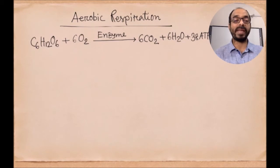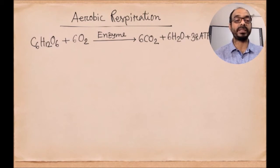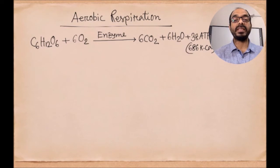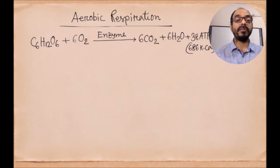Here, enzymes act as catalysts. A catalyst is a type of biochemical substance that accelerates the rate of reaction and controls the activities of the reactions. From one molecule of glucose in the presence of six molecules of oxygen, it produces six molecules of carbon dioxide, six molecules of water, and 38 ATP or 686 kilocalories of energy.